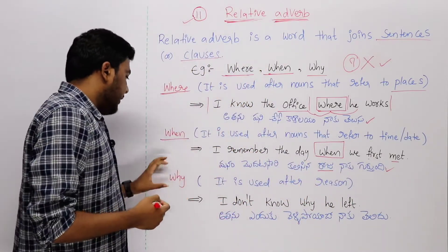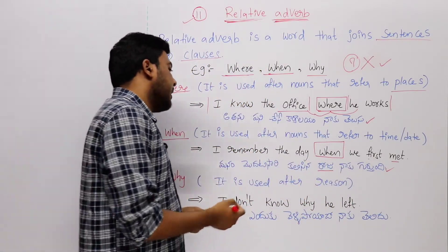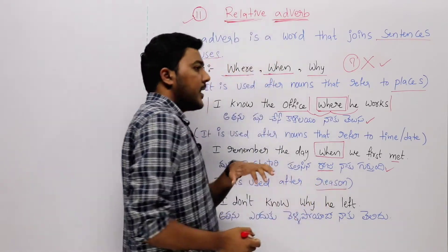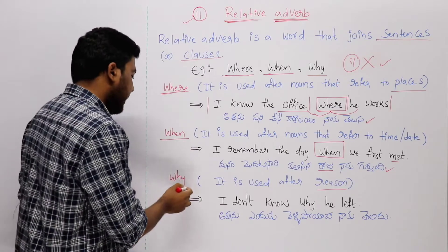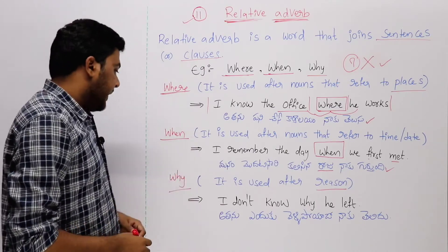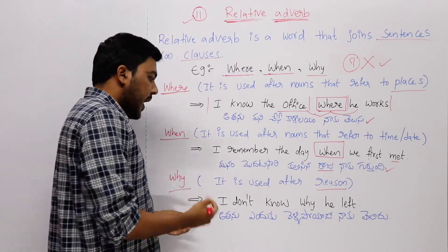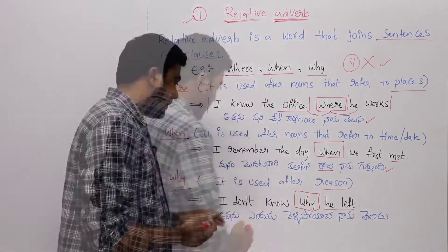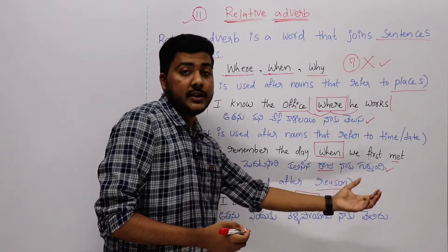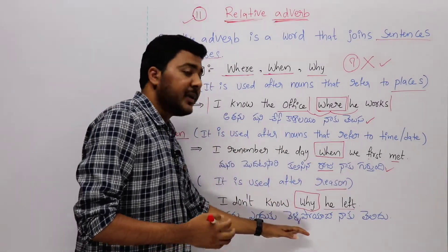Next one: why. It is used after reason. After reason or cause, we use the relative adverb 'why'. Example sentence: I don't know why he left.